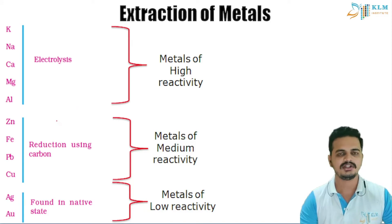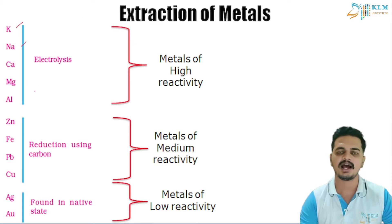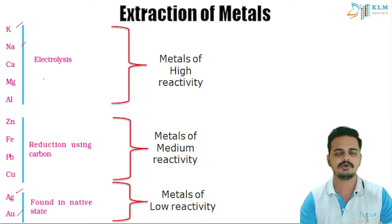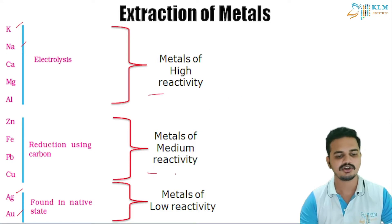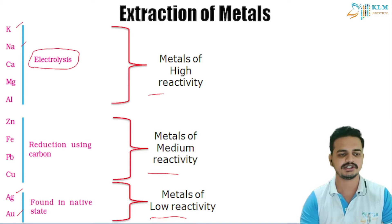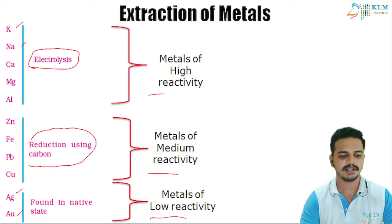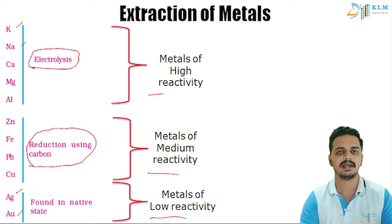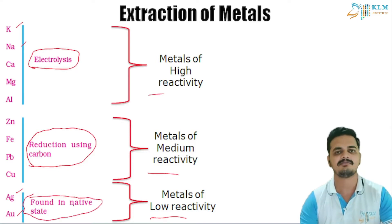You already know the reactivity series — potassium and sodium are high in the reactivity series, while silver and gold are low. We classify metals into high reactivity, medium reactivity, and low reactivity because their extraction methods are different. Metals of high reactivity are extracted by electrolysis, metals of medium reactivity by reduction using carbon, and metals of low reactivity are mostly found in their native state — we just separate the gangue particles.